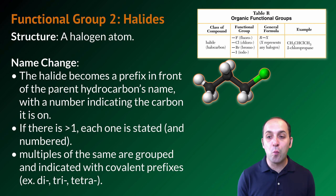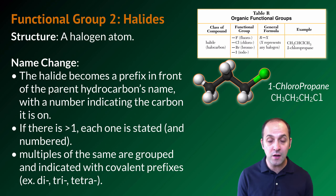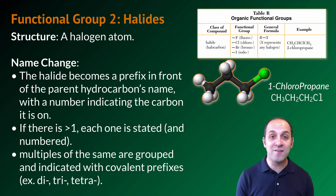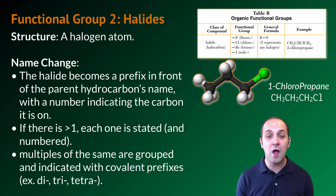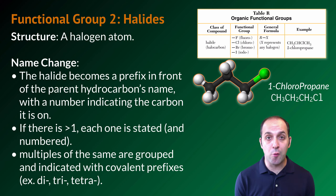Our example halide is 1-chloropropane. The reason it's chloropropane is because we put a chlorine in place of a hydrogen, and the reason it's 1-chloropropane is because we put that chlorine on the number one carbon. If we put it on the middle carbon, it would be 2-chloropropane.